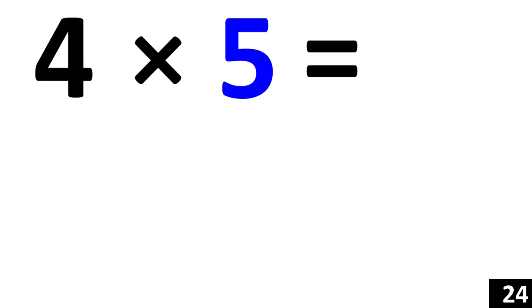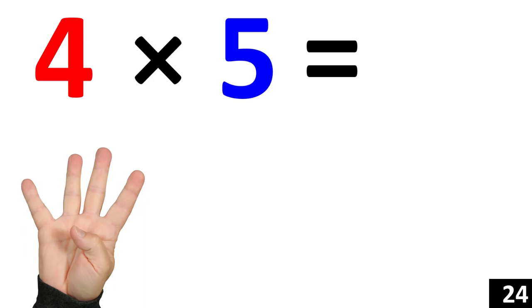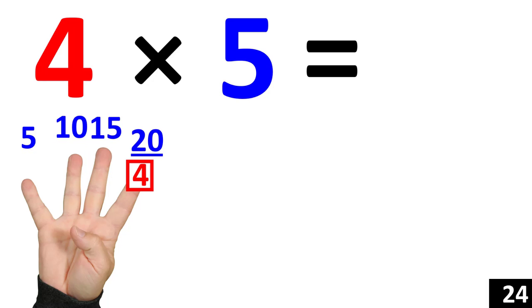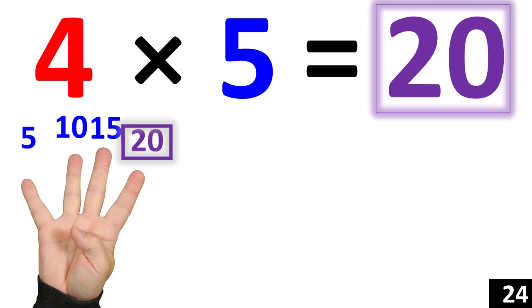4 times 5 is the same thing as counting by 5 four times. 5. 10. 15. 20. 4 times 5 is equal to 20.